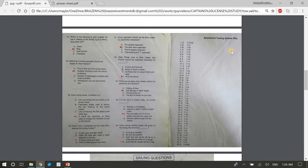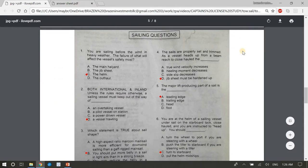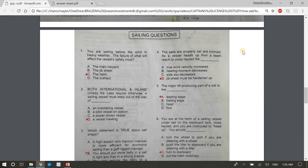So there are the answers for assistance towing. That's the assistance towing questions. Okay, and now let's go on to the sailing exam. These are the questions for sailing. I think there's 30 of them. I think all of them are on the test. Number one, you are sailing before the wind in heavy weather. The failure of what will affect the vessel's safety most? The answer is C, the helm.